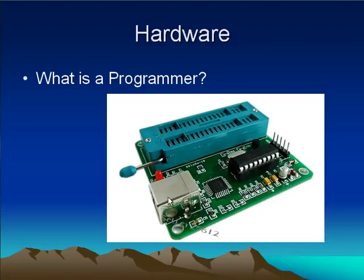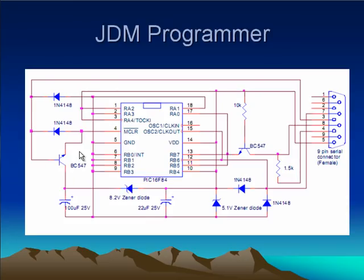Here you can see a picture of a programmer. A programmer is a device that we use to connect a microcontroller to the computer. We use computers to write programs, compile them, and program our microcontroller. In this tutorial I am going to show you how to create your own programmer — it is a very simple device you can build with basic electronics knowledge. This is the schematic of the JDM programmer, showing the microcontroller and the pins used to connect it to the programmer, which connects to the computer through the serial port.